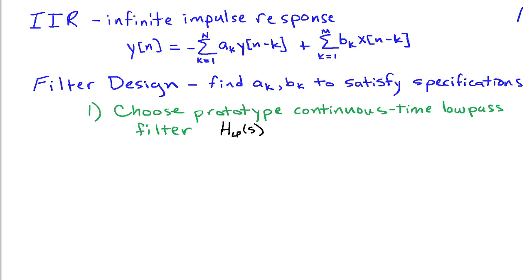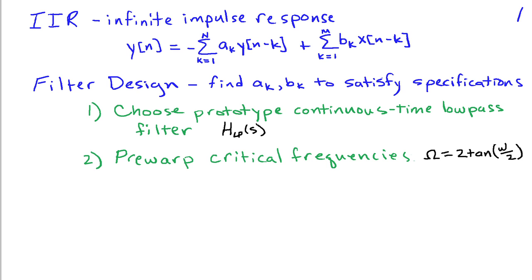We'll begin by choosing a prototype continuous time low pass filter, HLP of S, which could be a Butterworth filter, a Chebyshev type 1 or 2, or an elliptic filter. Next, we'll pre-warp the critical frequencies of our design. We take the frequencies of the discrete time filter, such as pass band edges and stop band edges, and map them into the corresponding frequencies required for the continuous time filter. This mapping is chosen so that when we later apply the bilinear transform to convert from continuous time to discrete time, our critical frequencies end up where we want them to be.